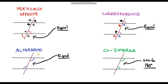Alternate angles are also equal. The way to remember this is that they are on alternate sides of the transversal — one on the right hand side, one on the left hand side. Co-interior angles sum to 180 degrees and they are always interior to our parallel lines, not the outer angles. So this angle here and this angle will also sum to 180 degrees.